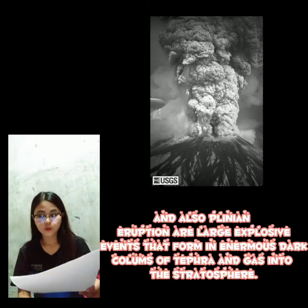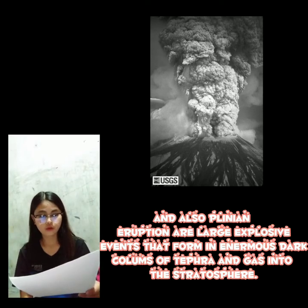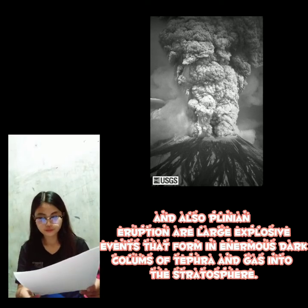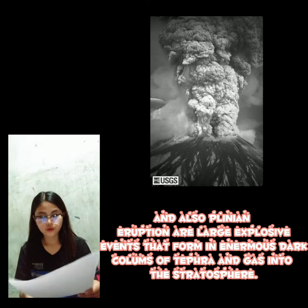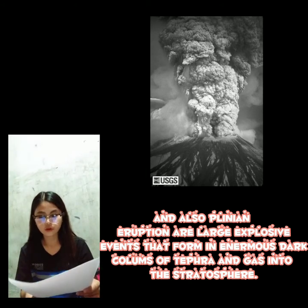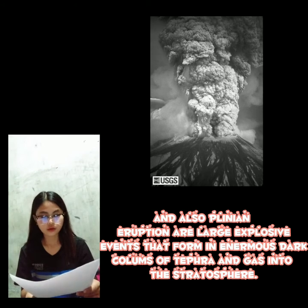Plinyan eruptions are large explosive events that form enormous columns of ash and gas high into the stratosphere. Longer eruptions begin with the production of clouds of volcanic ash, or sometimes with pyroclastic surges.